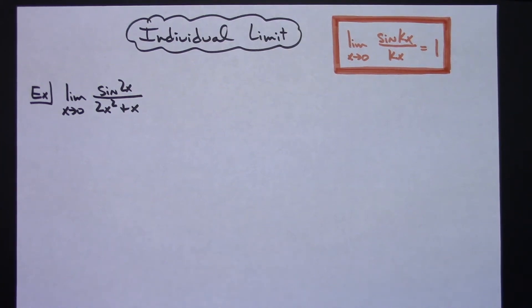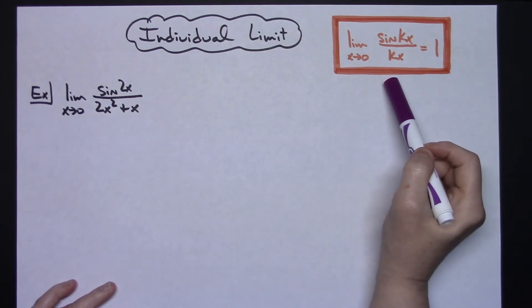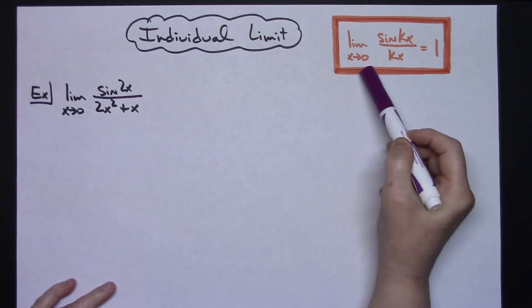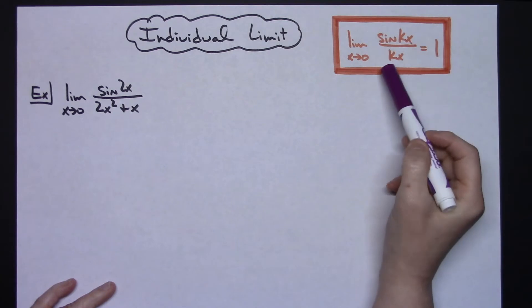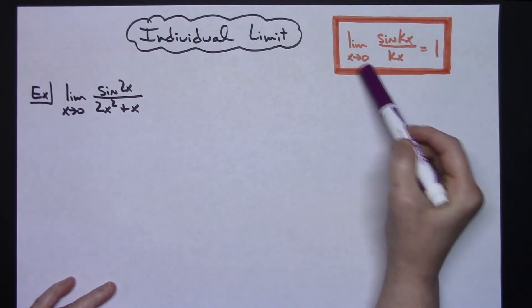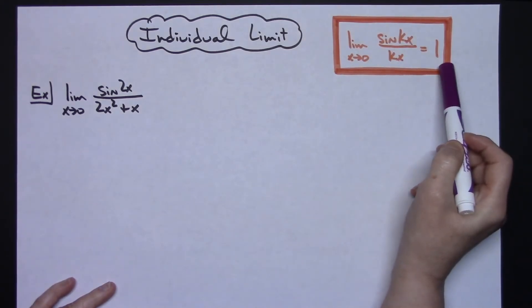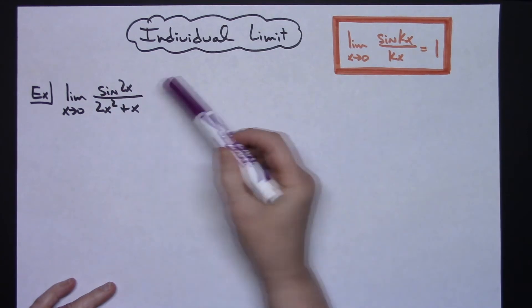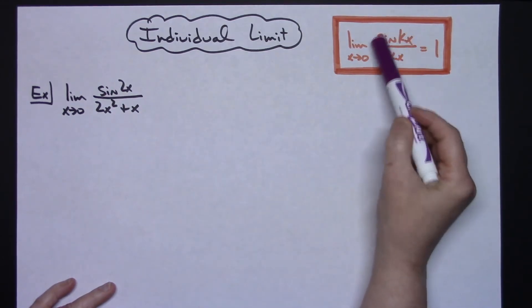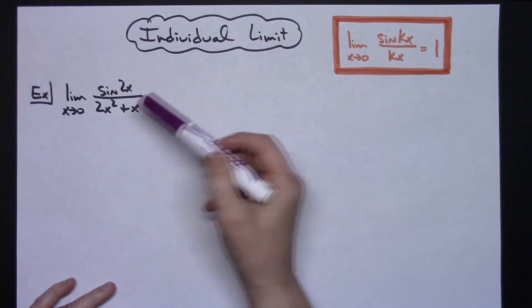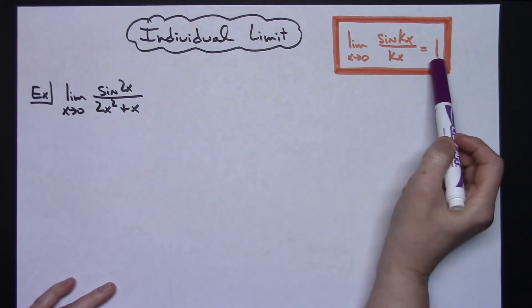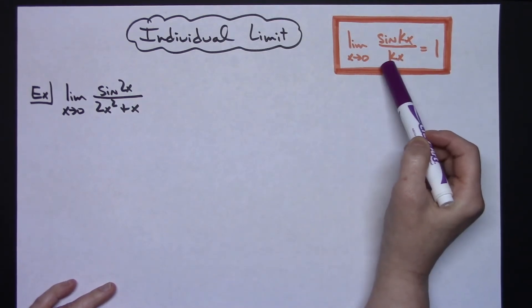In this video I'm going to be working out an individual limit problem. I will reference the limit as x approaches 0 of sine kx over kx, which we know is a known limit of 1. My goal, since I have a sine in this one, is to force my algebraic work to look like this so that I can apply this concept that I know this limit is equal to 1.